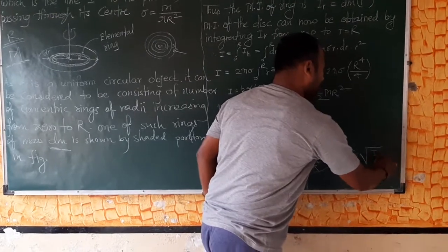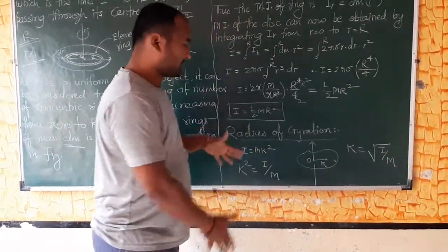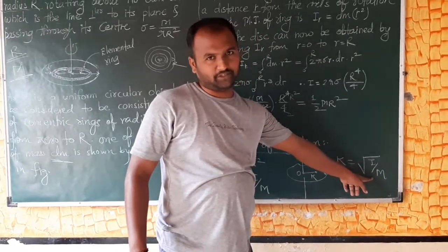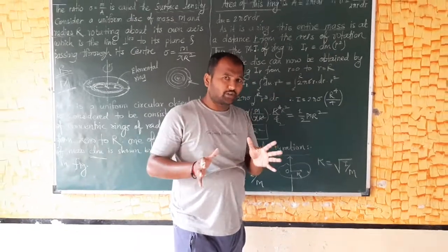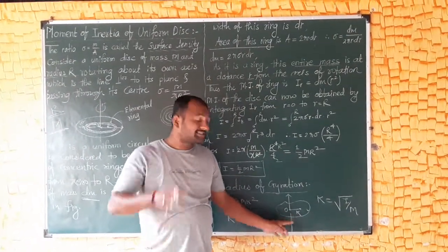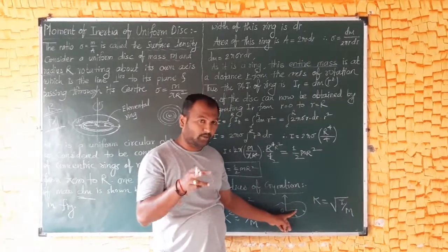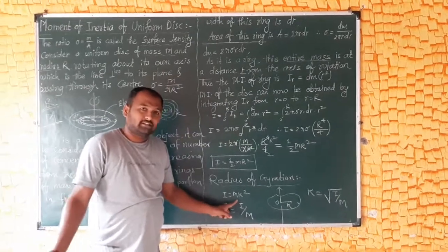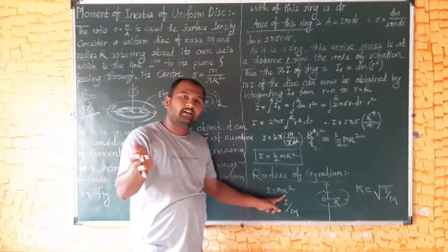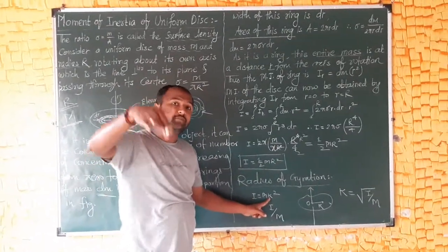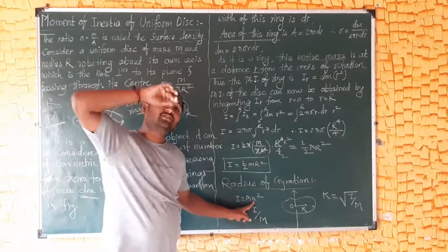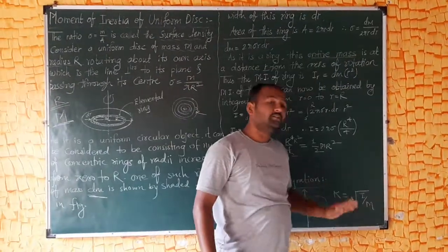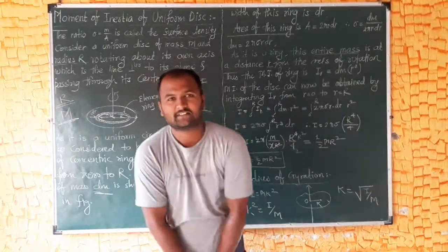So this is the value of the radius of gyration: k equals square root of I upon M. If a rigid body is rotating about a fixed axis of rotation such that its whole mass is concentrated in a single point at a distance k from the axis of rotation, then k is the radius of gyration. Therefore k squared equals I upon M, and k equals the square root of I upon M.